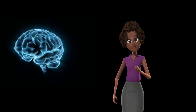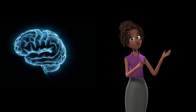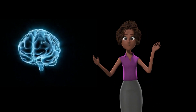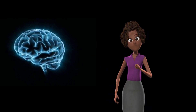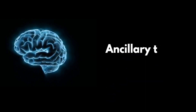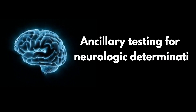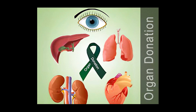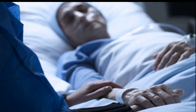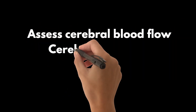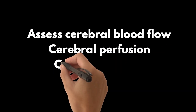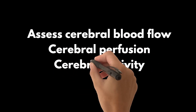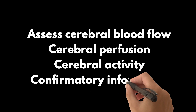Hello, everyone. Welcome back to our channel. Today, we're going to explore a critical and complex topic in intensive care medicine: the determination of death by neurologic criteria, or DNC. This area of expertise is crucial for identifying potential organ donors and providing appropriate end-of-life care. But how do we accurately determine DNC? That's where ancillary tests come in. These tests assess cerebral blood flow, cerebral perfusion, and cerebral activity, providing valuable confirmatory information.